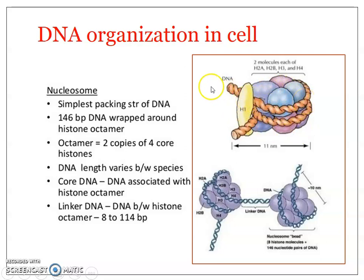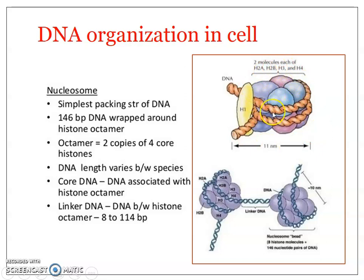The DNA duplex is wound around a histone core — that is a protein. You can see the histone core inside and the DNA double helix wound around it. It is bound around the histone core twice. And this is how the packaging starts — the first step in packaging. When the DNA gets associated with the histone core, the structure formed is known as a nucleosome.